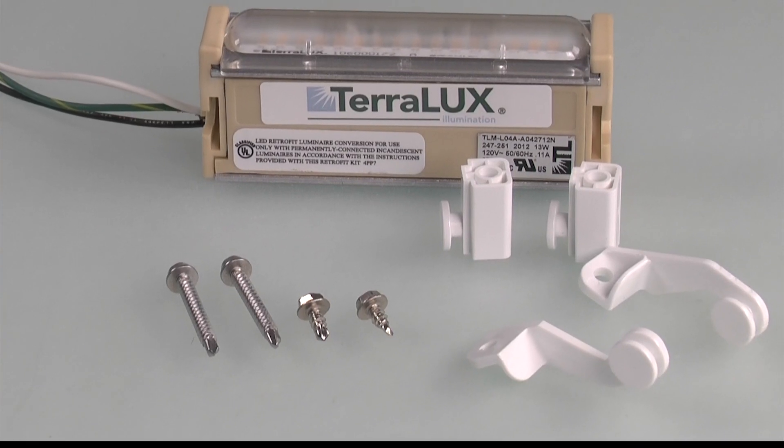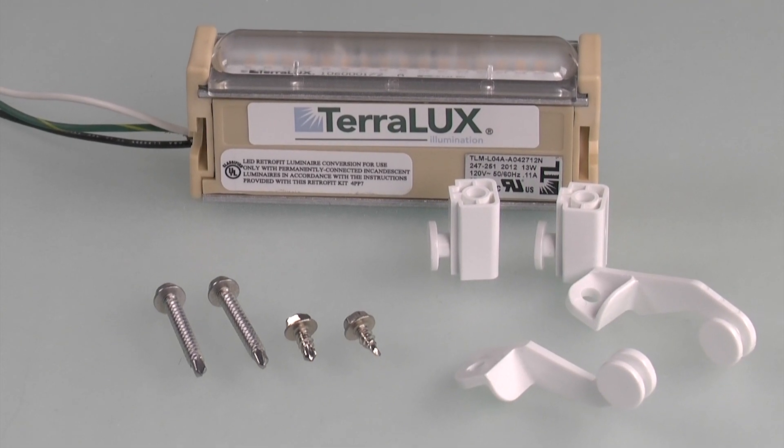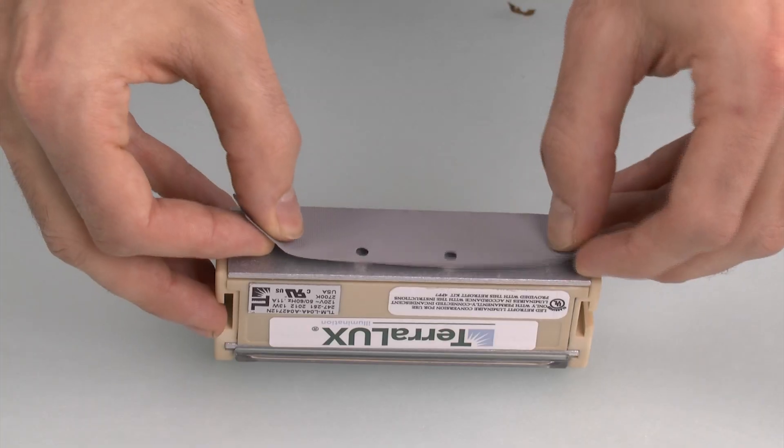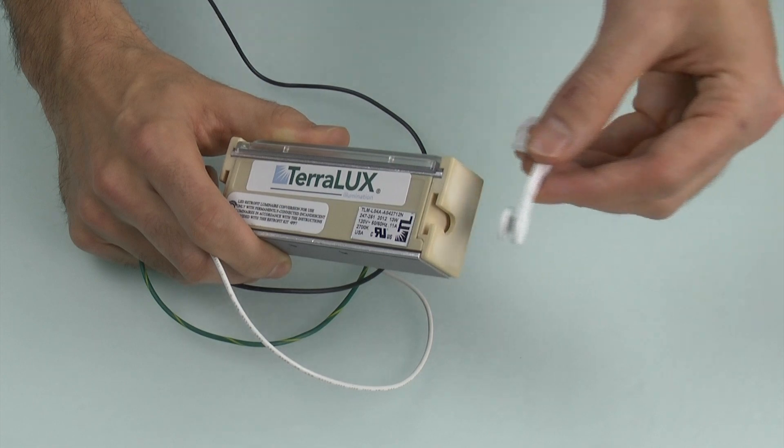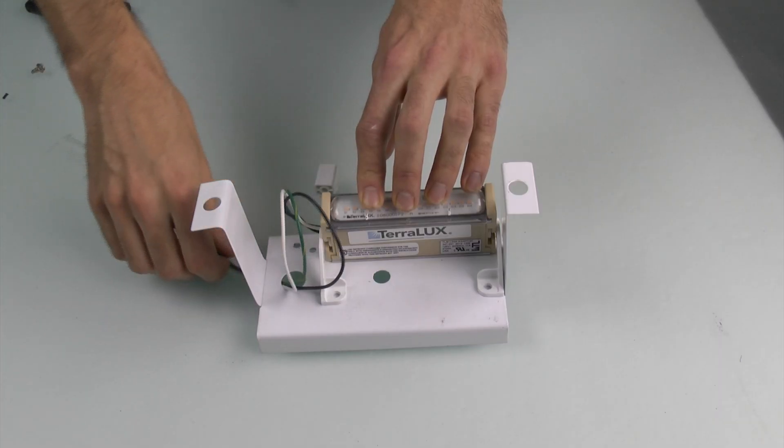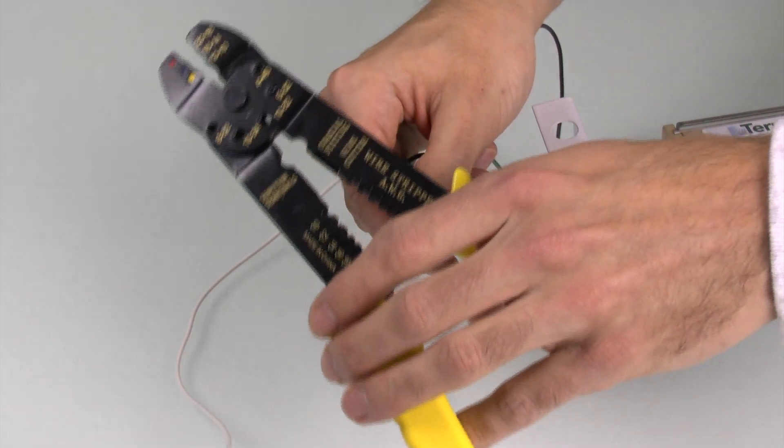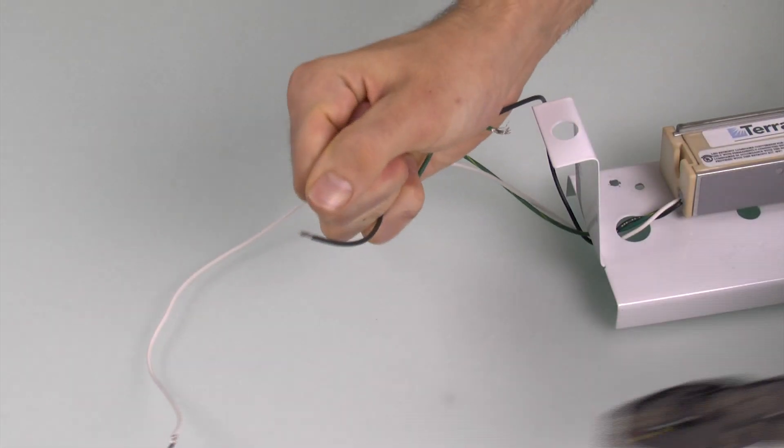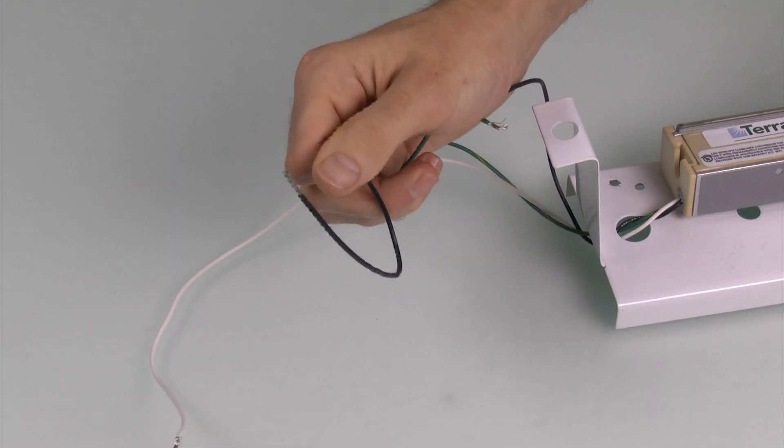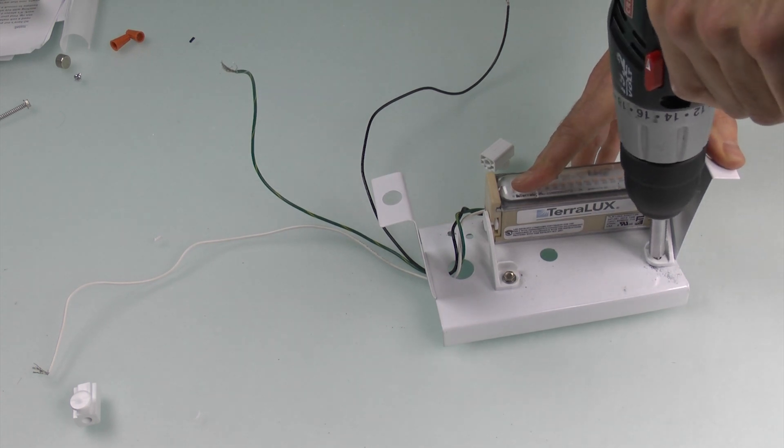We'll attach this unit with the included mounting brackets and self-drilling screws. First, attach the adhesive thermal strip to the back of the module. Next, fit the mounting brackets, then position your module so the wires can feed through the necessary space. You'll also want to check your leads and use some wire strippers to ensure you've got enough exposed wire to work with. Next, we'll secure our brackets to the fixture.